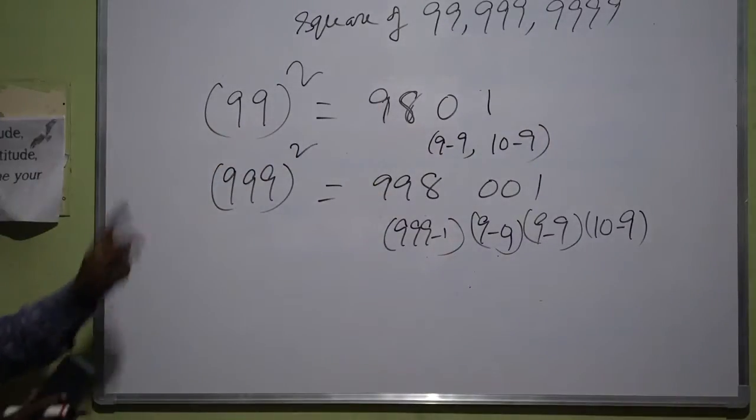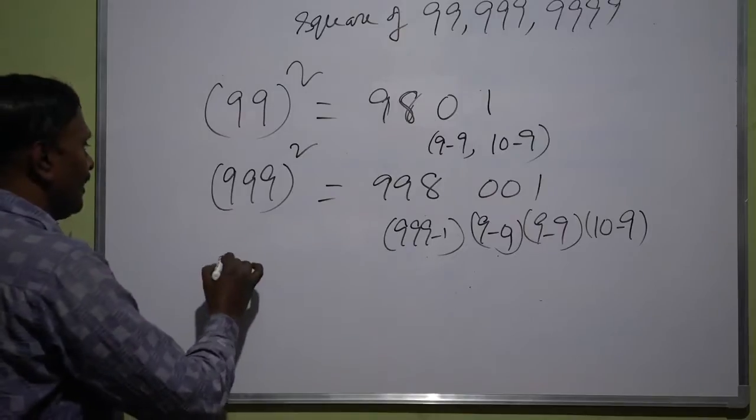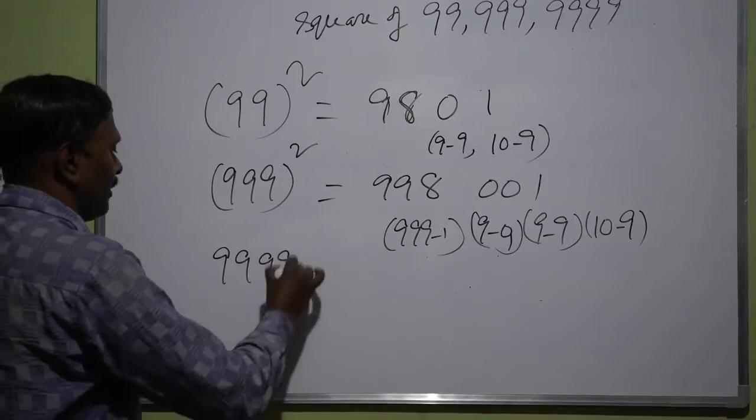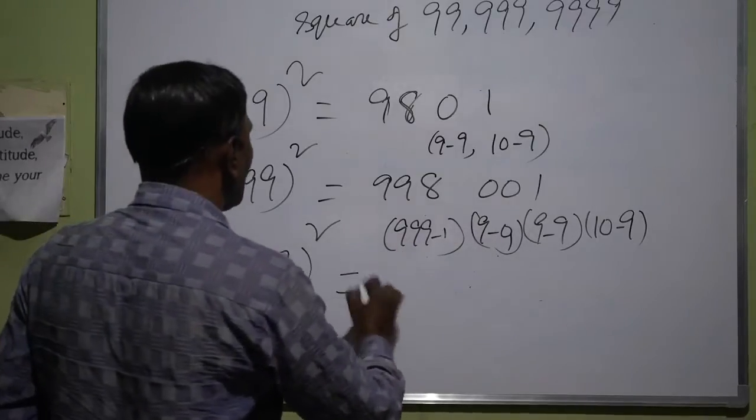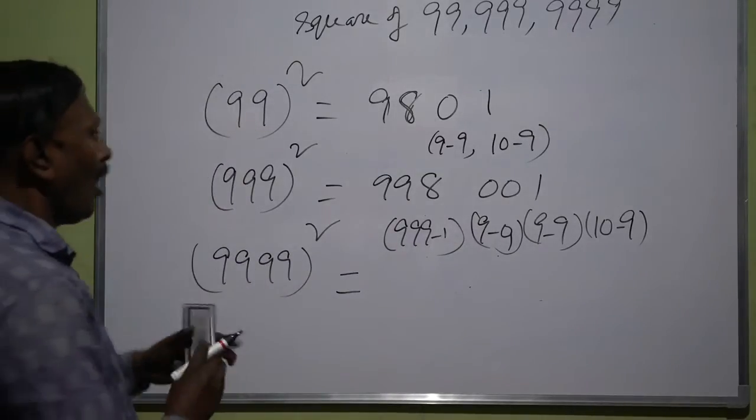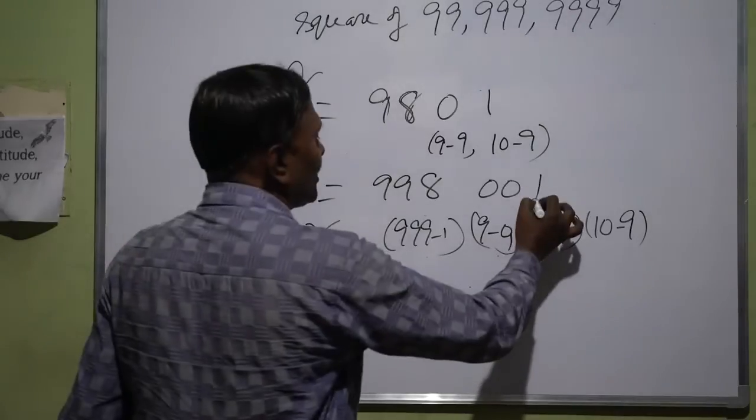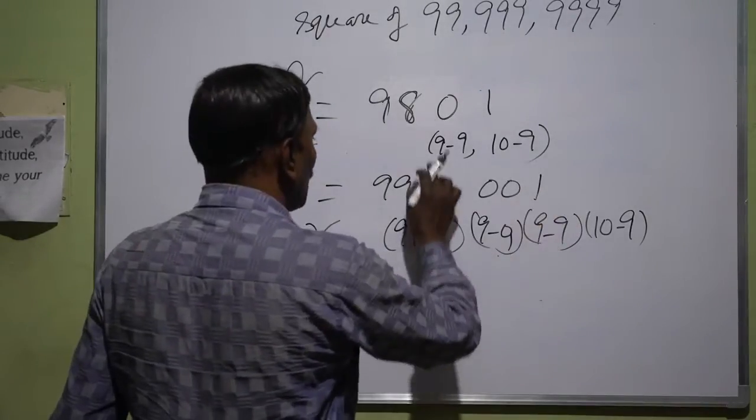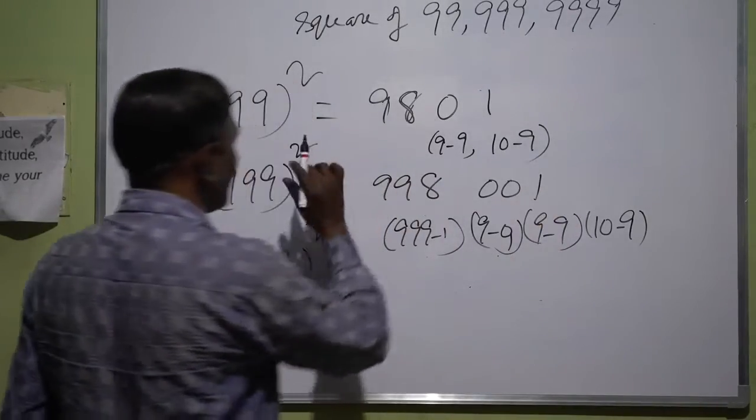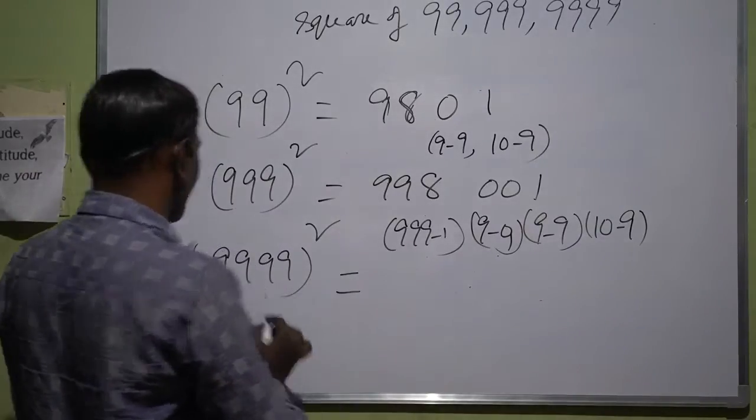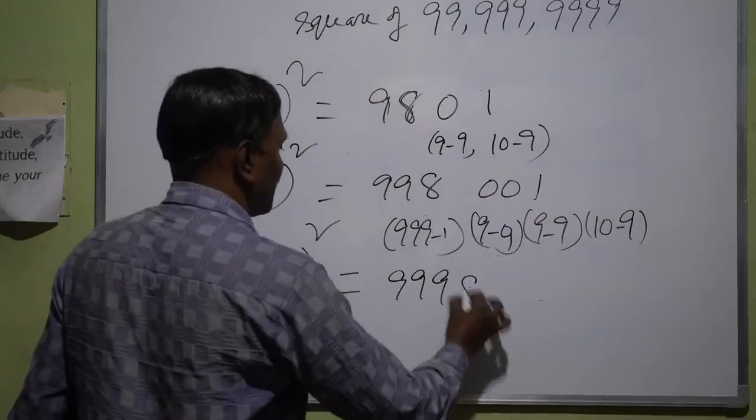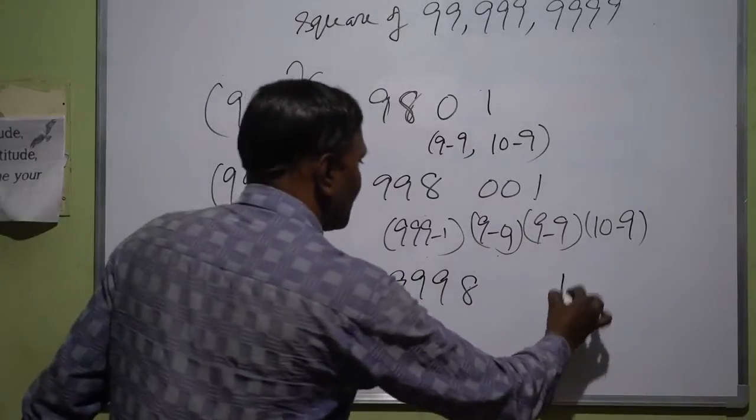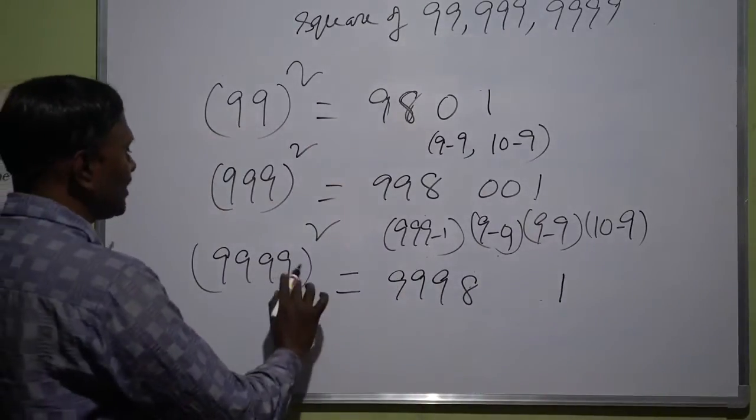You see you should remember directly, no need to write all those things, you can write it directly. Automatically the units place digit is 1 and the total number of digits you just count it and ultimately you can write it directly. See, subtract 1 and the units place is 1 and the total number of digits you will get it.